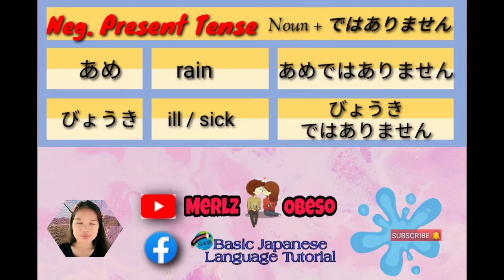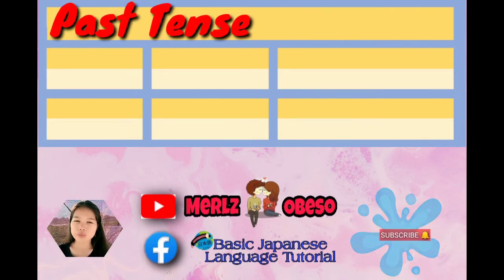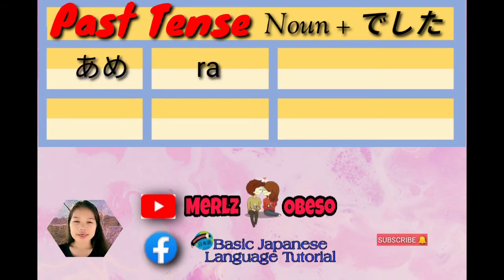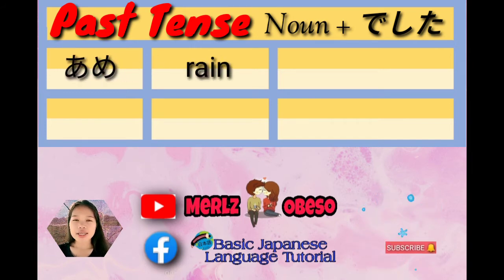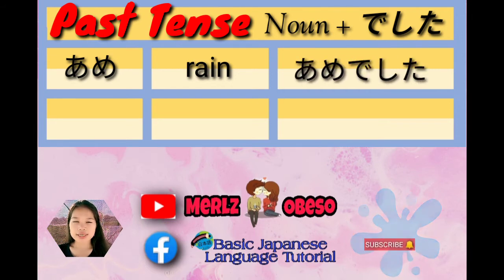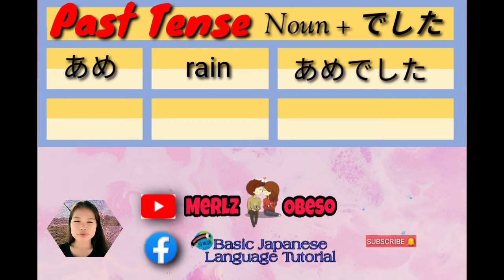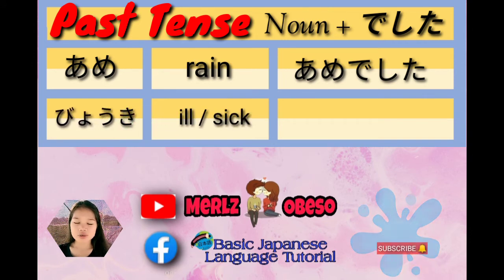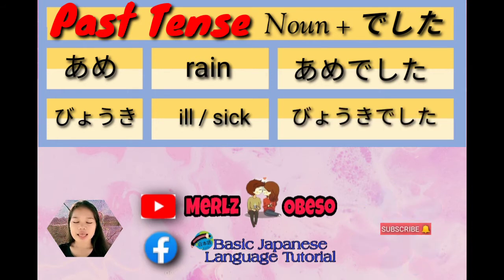Next subform: past tense. Ang rule niya is noun plus deshita. First example: ame, rain. Noun and ad deshita magiging ame deshita, or in English, it was raining. Next example: buki, ill or sick. Noun and ad deshita magiging buki deshita — I was sick or I was ill.